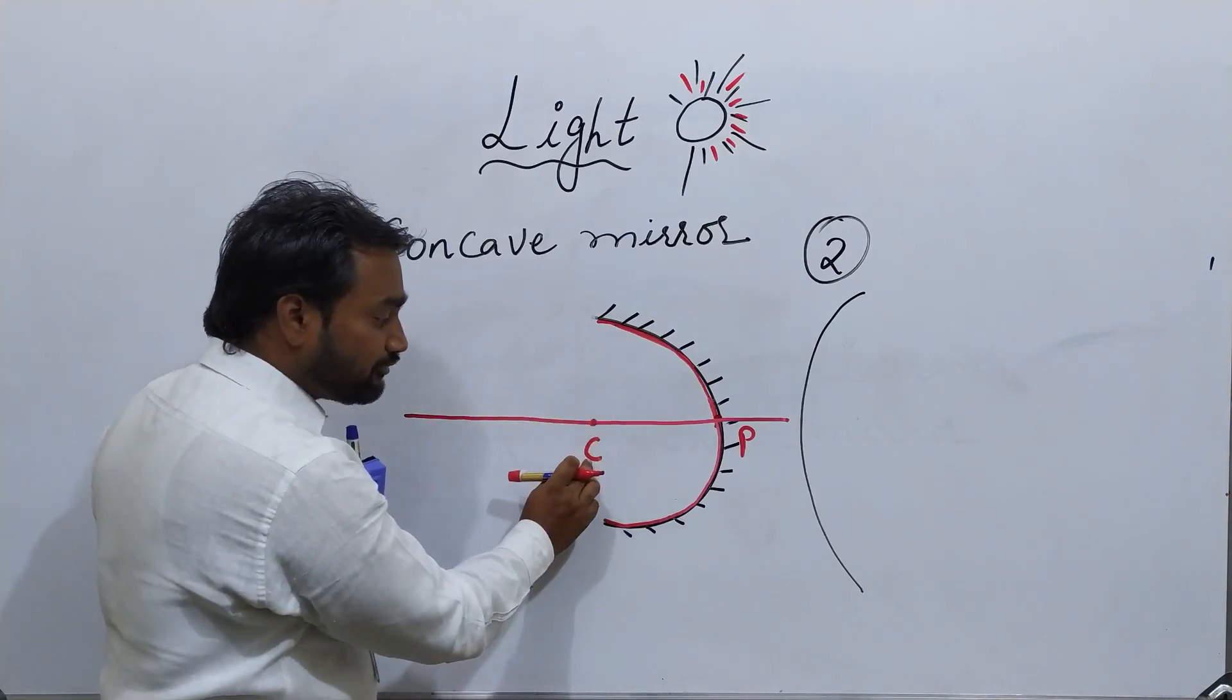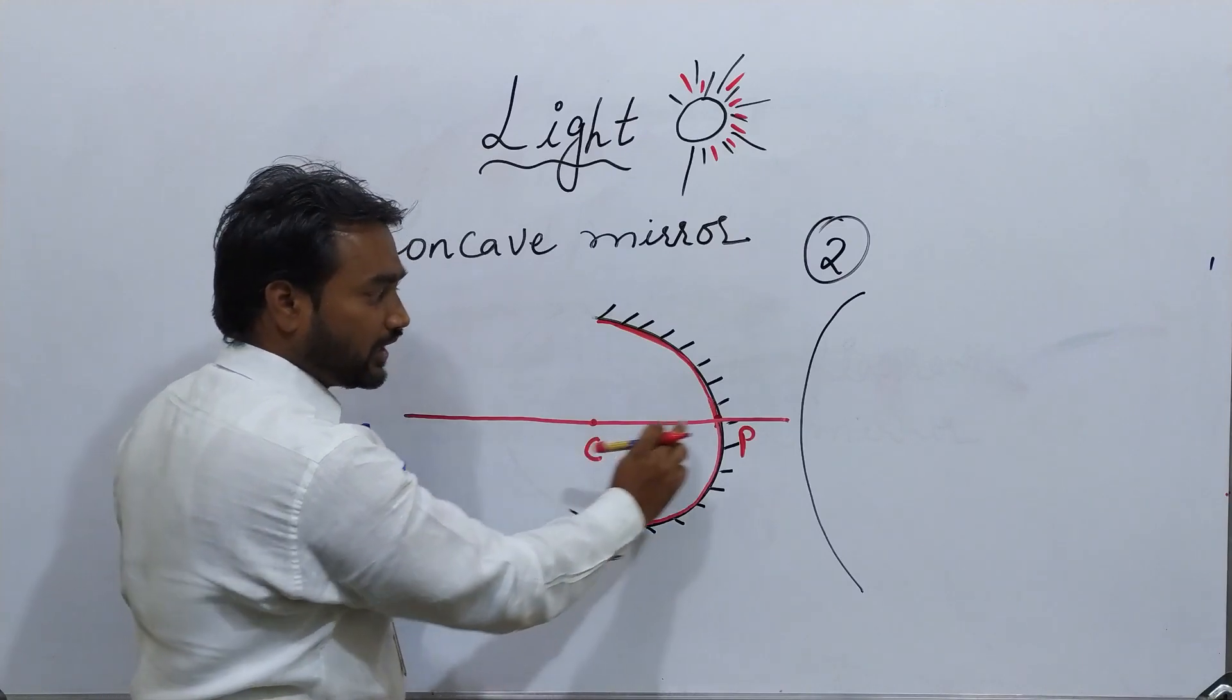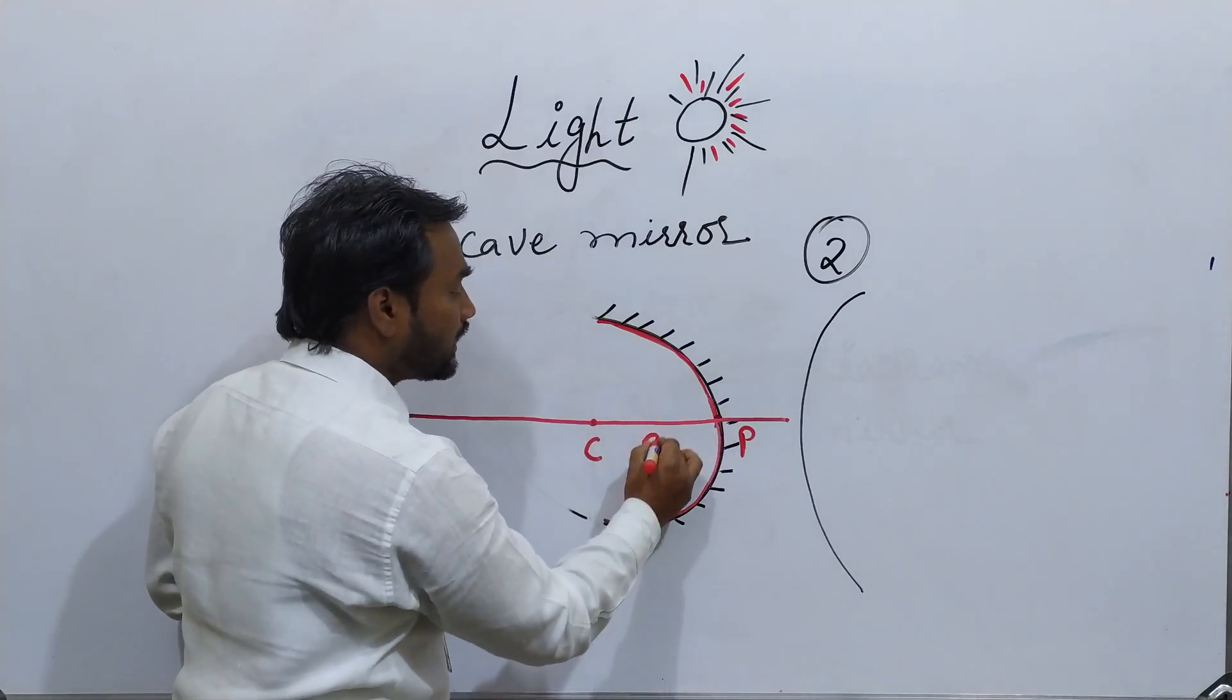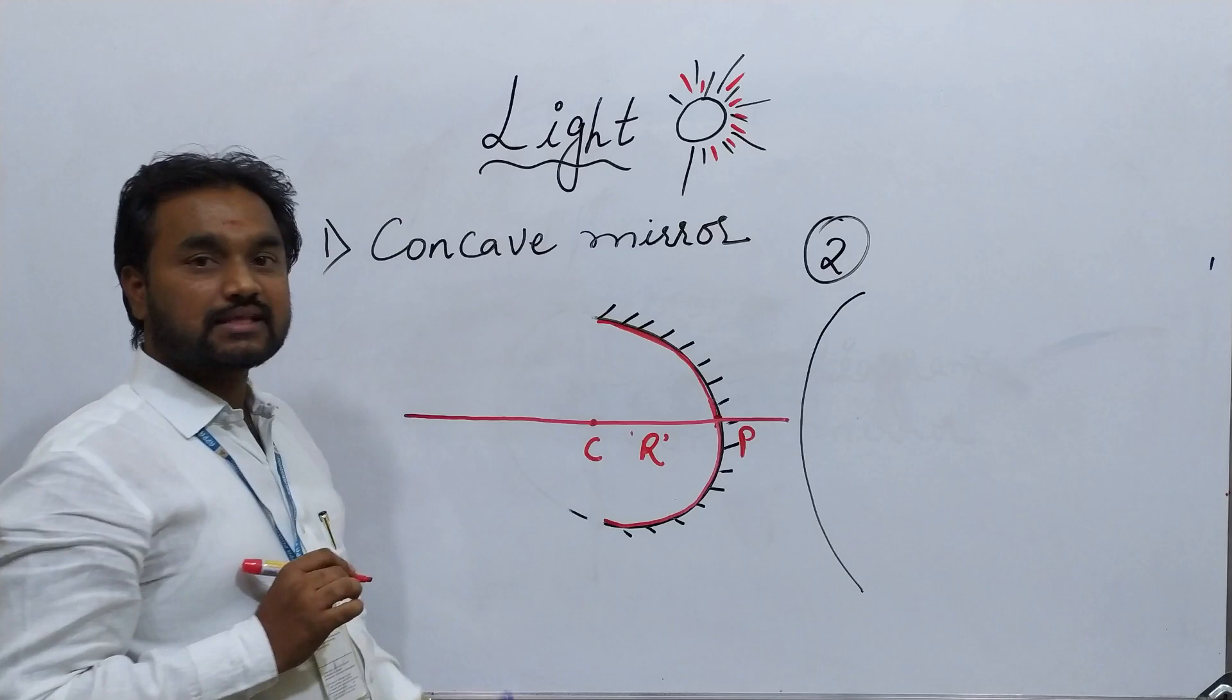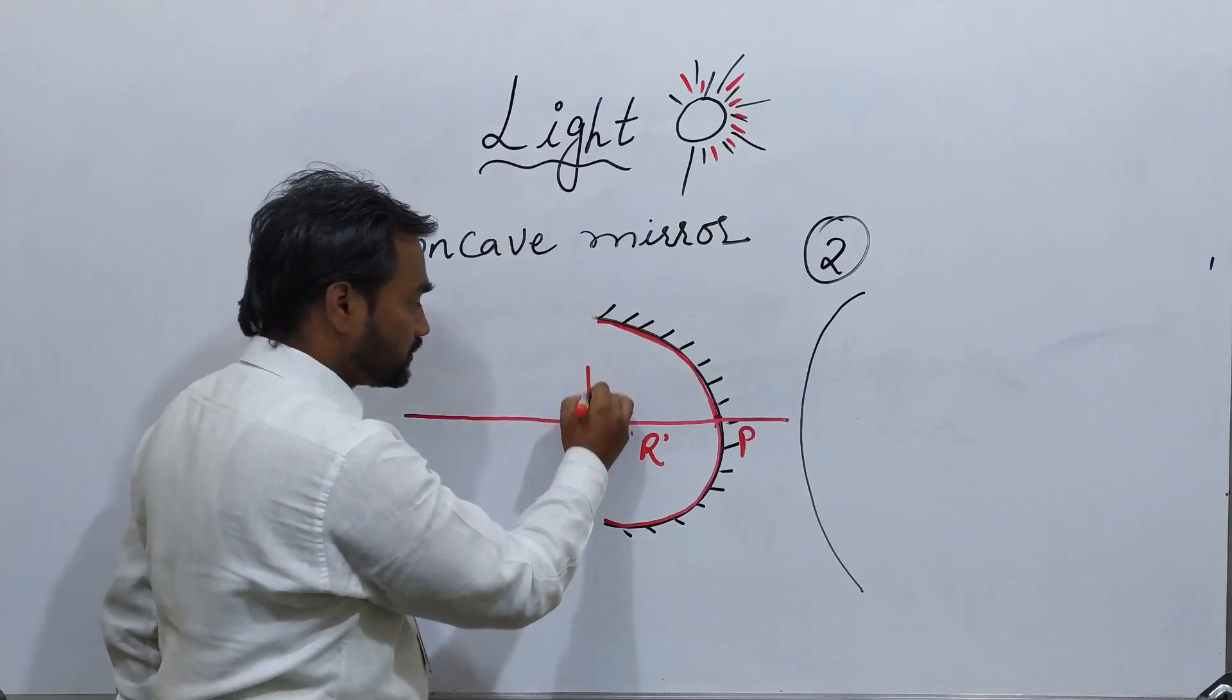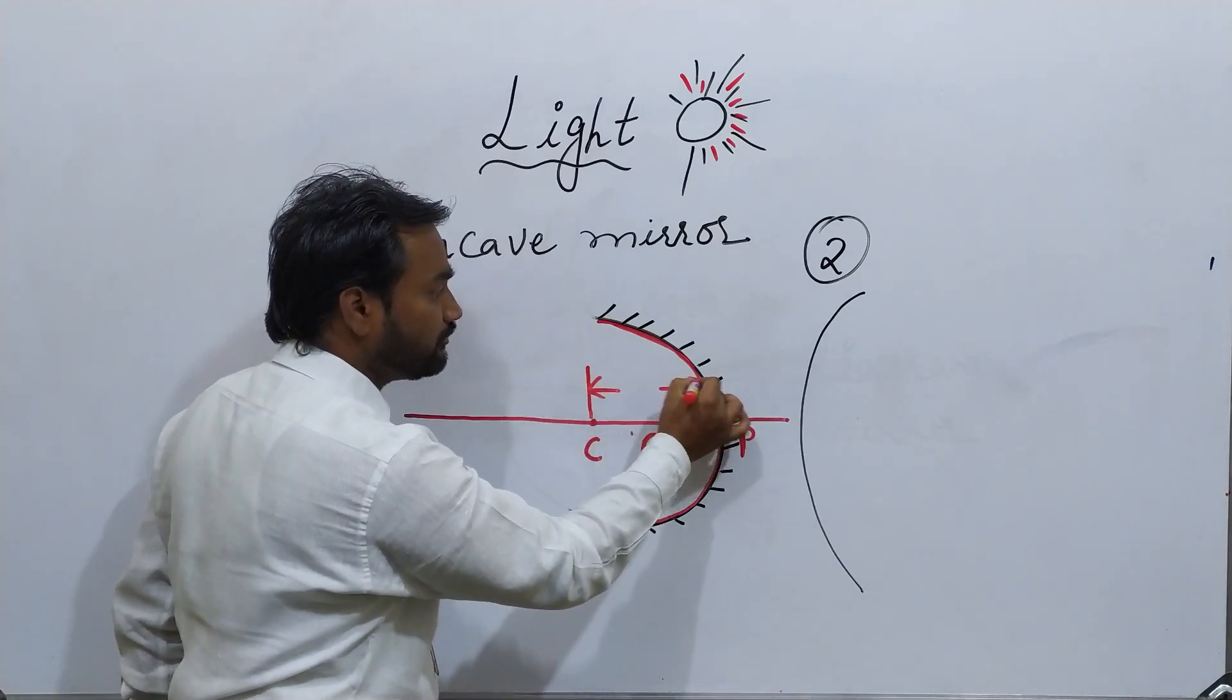Now coming back to here, from the center of curvature to the pole, we call it as radius of curvature and it is denoted. So this is the radius of curvature.